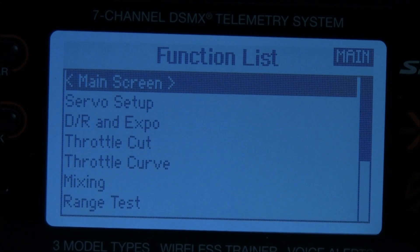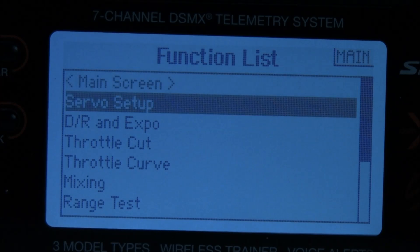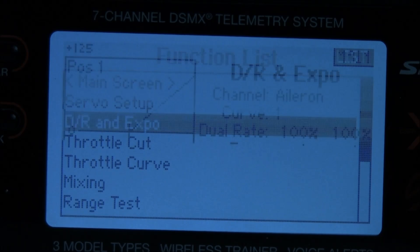Depress the scroll switch once. This puts you into the functions list. Scroll down to dual rate and expo. Depress the scroll switch once. And then we have the menu for dual rate and expo.